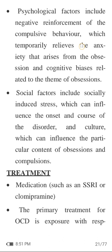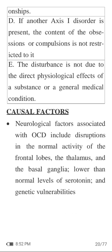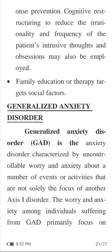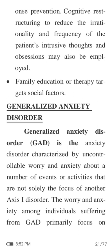The disturbance is not due to the direct physiological effect of a substance or a general medical condition. Causal factors: neurological factors associated with OCD include disruptions in the normal activity of the frontal lobes, the thalamus and the basal ganglia, lower than normal levels of serotonin, and genetic vulnerabilities. Psychological factors include negative reinforcement of the compulsive behavior which temporarily relieves the anxiety that arises from the obsession, and cognitive biases related to the theme of obsessions. Social factors include socially induced stress which can influence the onset and course of the disorder, and culture which can influence the particular content of obsessions and compulsions. Treatment includes medications such as SSRIs or clomipramine. The primary treatment for OCD is exposure with response prevention, and cognitive restructuring to reduce the irrationality and frequency of intrusive thoughts and obsessions may also be employed. Family education or therapy targets social factors.